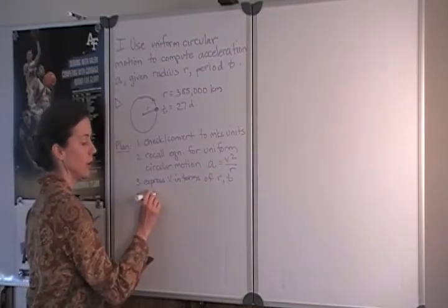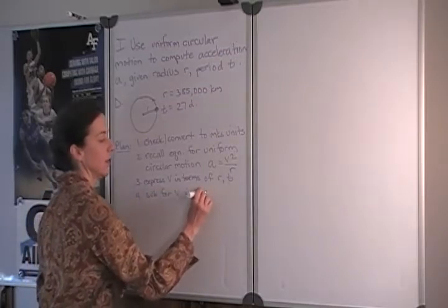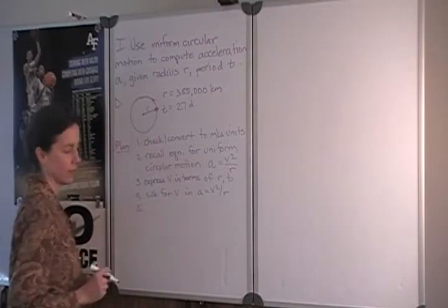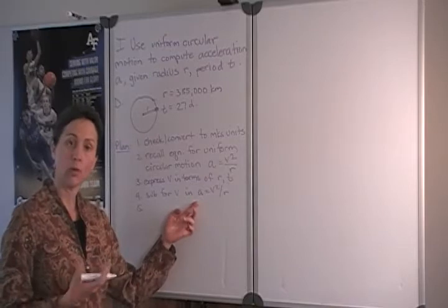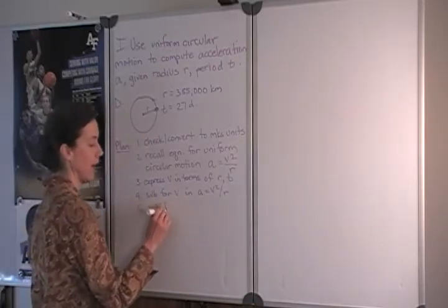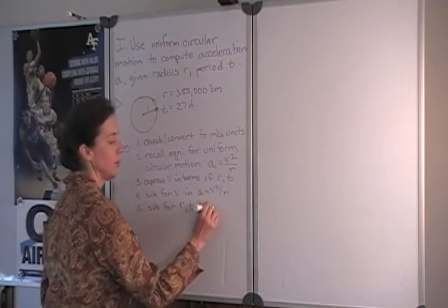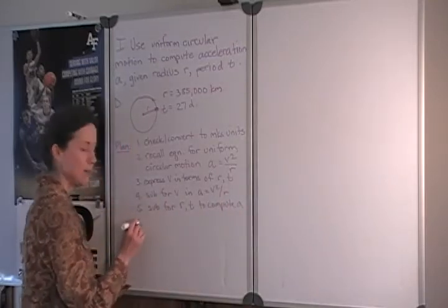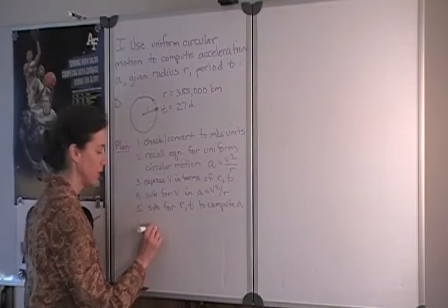Then we can substitute for the velocity that new expression into the expression for uniform circular motion. Since a is already isolated the acceleration and that's what we're looking for we would then be ready to substitute specific values for the radius and the period to compute the acceleration. And before we report our final answer we want to consider how many significant figures to use.